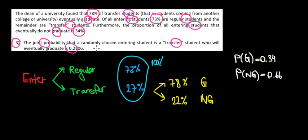What we also know is that out of transfer students, 78% graduate and the remainder don't graduate. So 22% is the remainder because they make up 100.